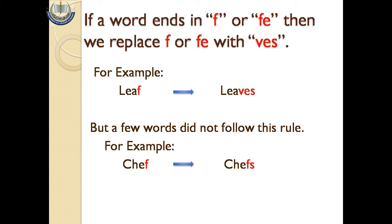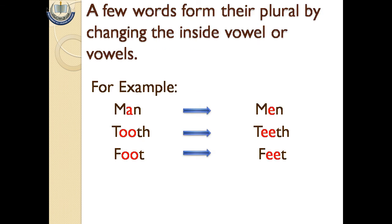A few words form their plural by changing the inside vowel or vowels. Kuch words ke plural banane ke liye unke vowels ko change kiya jata hai. Vowel ek ya ek se zyada bhi ho sakti hain. For example: man becomes men, tooth becomes teeth, foot becomes feet.